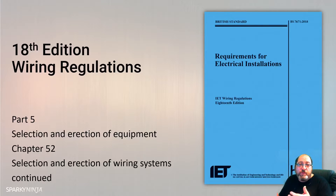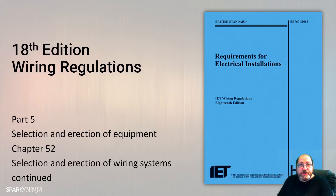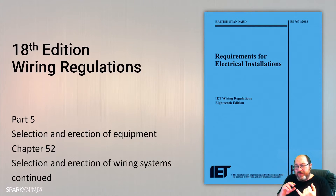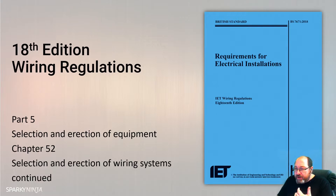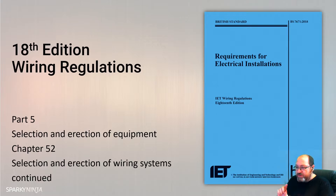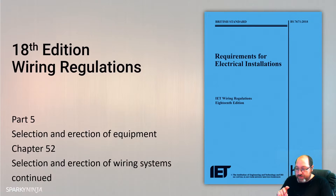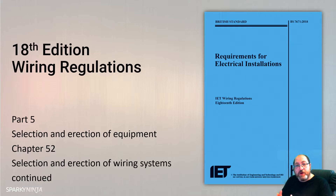We're going to look at finishing off chapter 52, which is selection and direction of wiring systems. We've talked about the wiring systems themselves with the reference methods, sizing of the live conductors, sizing of the neutrals, and volts drop. We're now going to look at some other common things we need to consider.